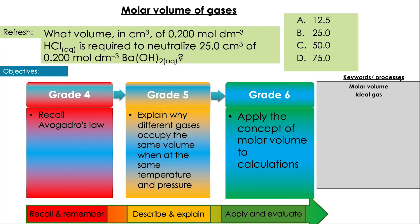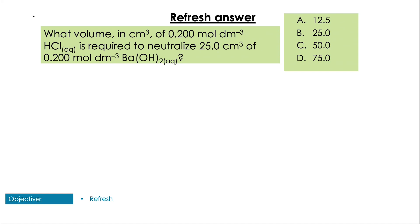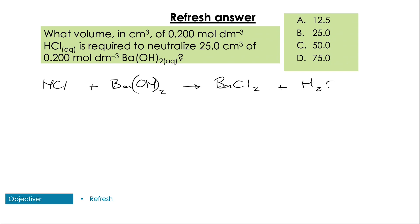First, I'd like you to have a little try at this question on concentration and titrations. It's a paper one question, so try as much as you can to give it a go without using a calculator. We've got a paper one question here, so I'm going to do the whole calculation but also give you a tip on looking out for shortcuts we could be taking when doing paper one questions.